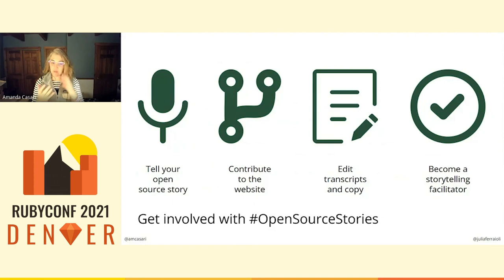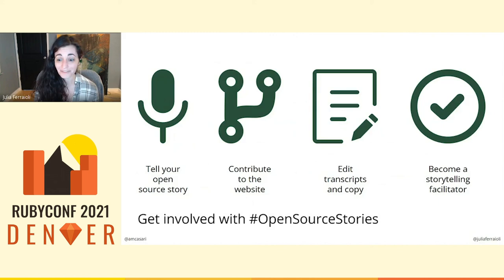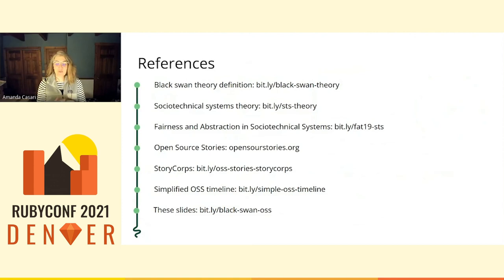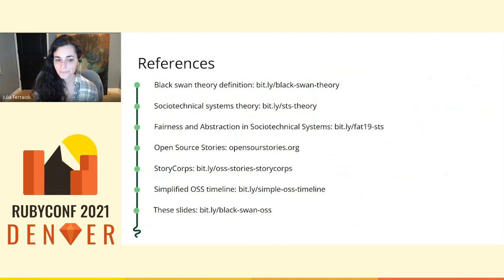The last piece is becoming a storytelling facilitator. Right now it's just Julia and I as of this recording date, and we would love for more people to join and become a facilitator — talk with somebody else. If you miss seeing people in person, this is a great way to have a casual yet interesting conversation with somebody you've maybe never met before. We've done a few and they are really fun, so I highly recommend it. If you are interested in any of the references we talked about in the slides, they are available at bit.ly/black-swan-OSS. We also have links for StoryCorps, Open Source Stories, socio-technical theory, black swan definition, and most excitingly the simplified OSS timeline that Julia built at bit.ly/simple-OSS-timeline. You can contribute to it as well, so please do.